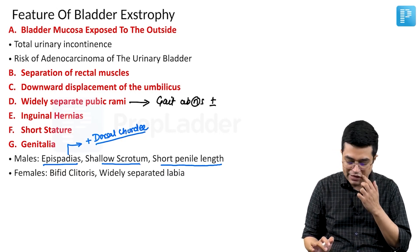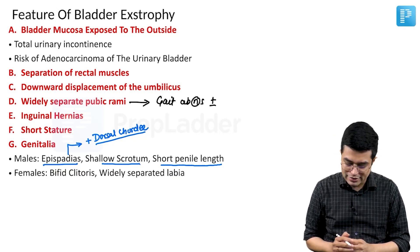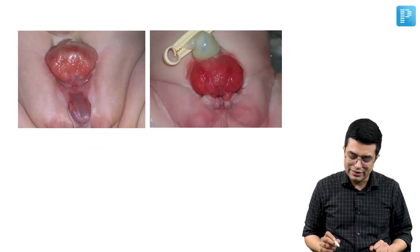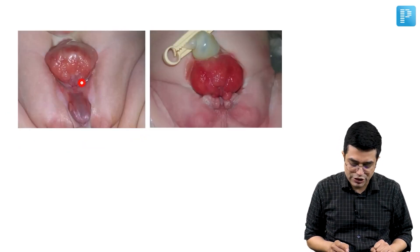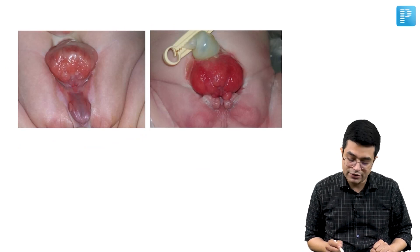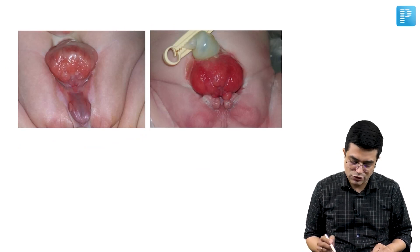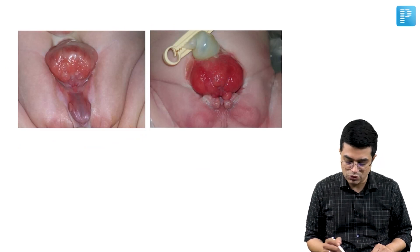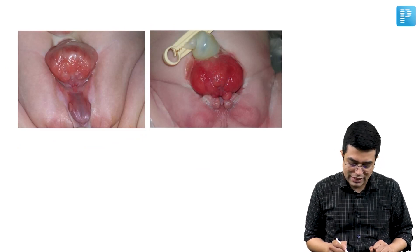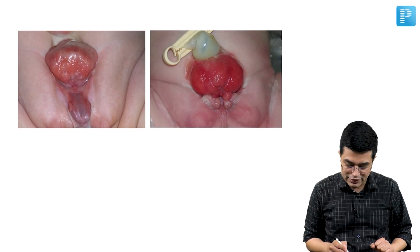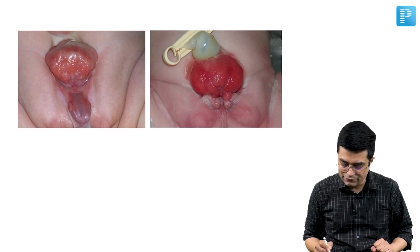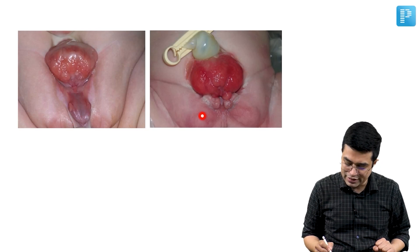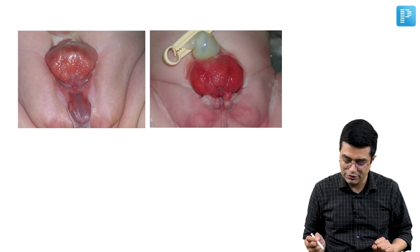Females will have a bifid clitoris and may have widely separated labia majora. Now have a look at these two images: this is a male child with bladder exstrophy, and this is a female child with bladder exstrophy. You can see the urinary bladder is exposed to the outside — the bladder mucosa is exposed. The male has a short phallus with epispadias, and the female has a bifid clitoris and widely separated labia majora.